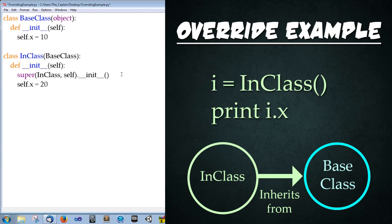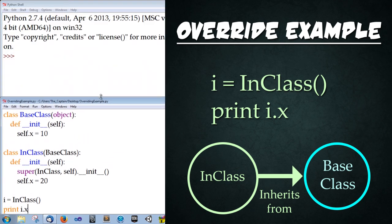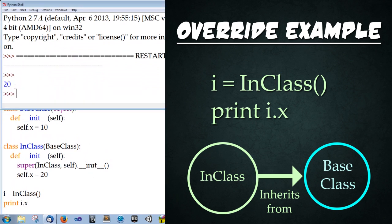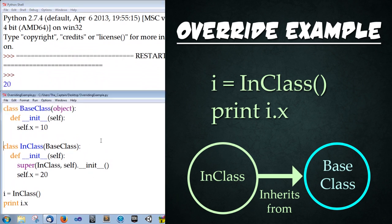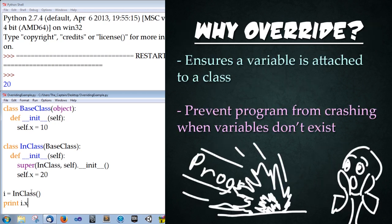Now we're going to unindent all the way back down and create an instance of this class by typing i equals InClass open close parenthesis, and then type print i dot x. And save. Now let's see what happens. I'm going to shrink this window down a little bit so we can see this in action. Once I run it, it prints out 20. Now why does this happen? The base class created that self dot x and set it equal to 10. And then in our inheriting class, we redefine that variable as 20. So it overrode the past value, which is exactly what we wanted.